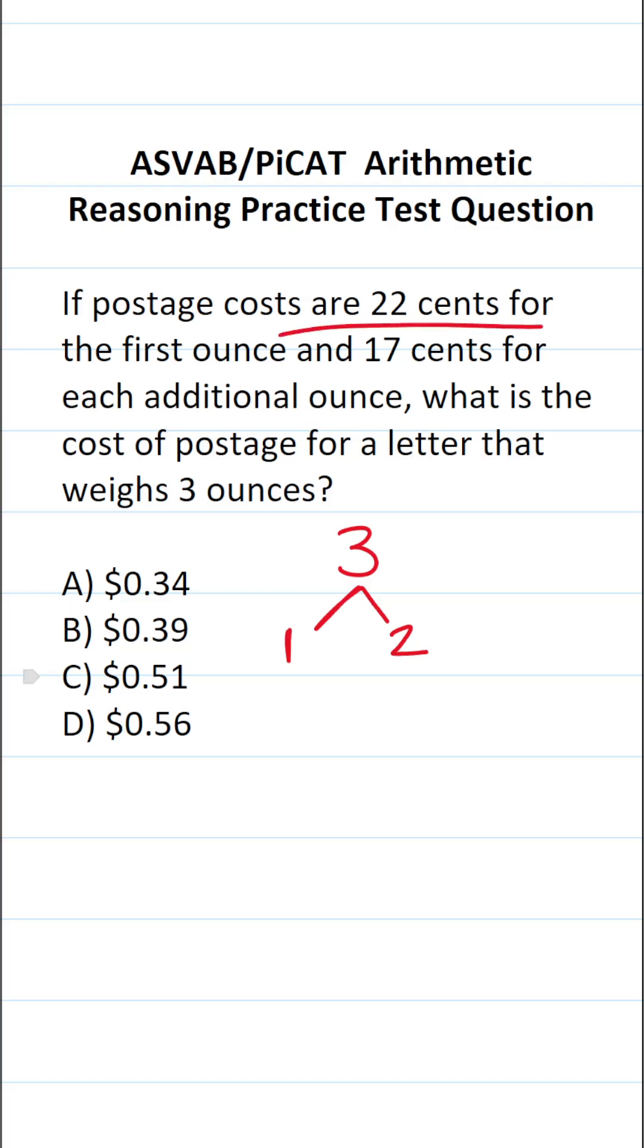For the first ounce, we're going to pay $0.22 in postage. And for the other two ounces, we're going to be paying $0.17. So that's going to be 0.17 times 2.